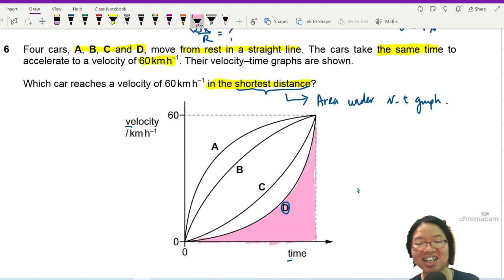Because, you can see, for the car in D, the acceleration is greatest. Because the gradient is getting steeper and steeper.